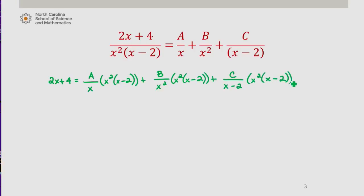And when we clean this up, we see we have Ax times x minus 2 plus B times x minus 2 plus Cx squared.